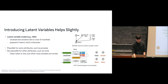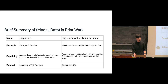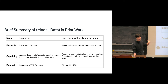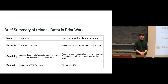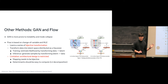To summarize, we have two model families: regression, and regression with low-dimensional latent. FastSpeech, Tacotron, or Global Style Token variants of Tacotron are examples. The left family assumes deterministic mapping and typically trains on simple datasets like LJ Speech or VCTK where all variations are specified. The right family can stretch a bit more to datasets like Blizzard or LibriTTS with more prosody, noise, and speaker variation.